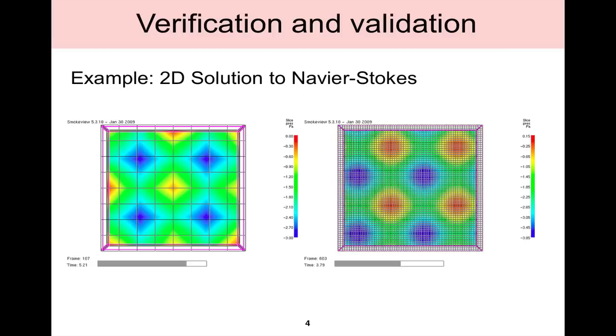Another example shown here is a 2D solution to the Navier-Stokes equations. Here it shows a slice of the pressure. On the left side is a coarse grid, on the right side is a finer grid, and in this case, looking for a convergent solution as you refine the grid. These are both examples of checking the math of the model to make sure that it doesn't have any bugs in the actual code.